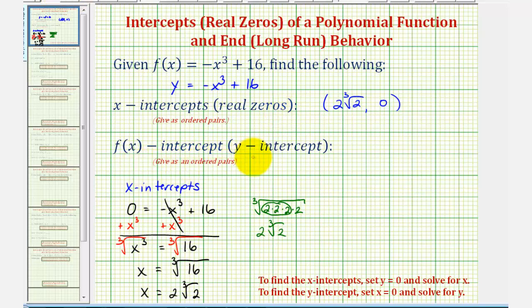And now to find the y-intercept, or f of x-intercept, we set x equal to zero, and solve for y, or solve for f of x. Let's use the equation here with y in it. So to find the y-intercept, we're going to set x equal to zero and solve for y, which would just give us y equals negative zero cubed plus 16, so we can easily see that the y-intercept is going to be 16. So the coordinates of the y-intercept would be the point zero comma 16.